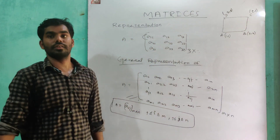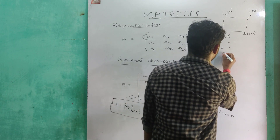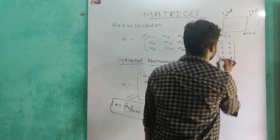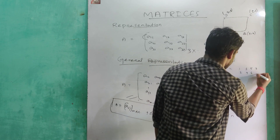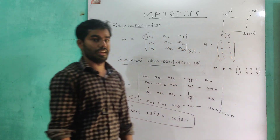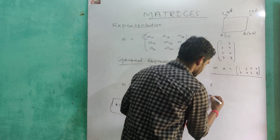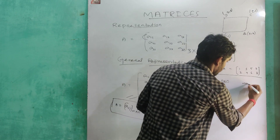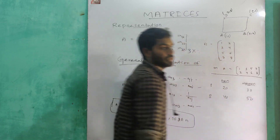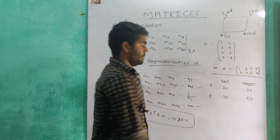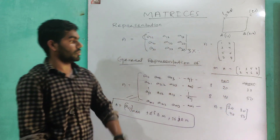Now I'm going to write it in matrix form. Matrix form: A equals to 1, 2, 3, 4, 5, 6, 7, 8. For example, suppose a big company has worker data — 20, 30, 40, 80 — this data can be represented in matrix form. Whatever data a company uses can be arranged as a matrix.